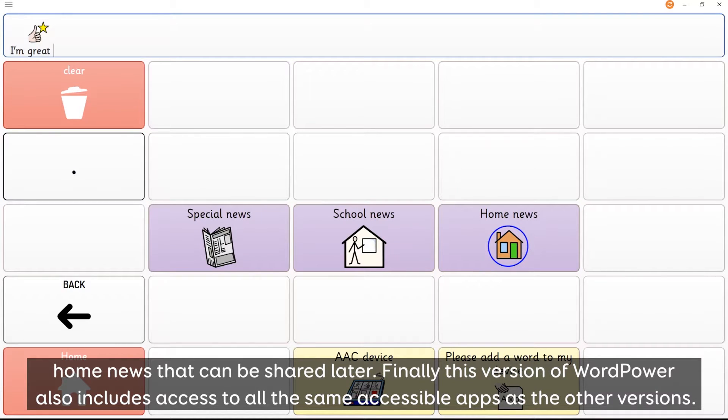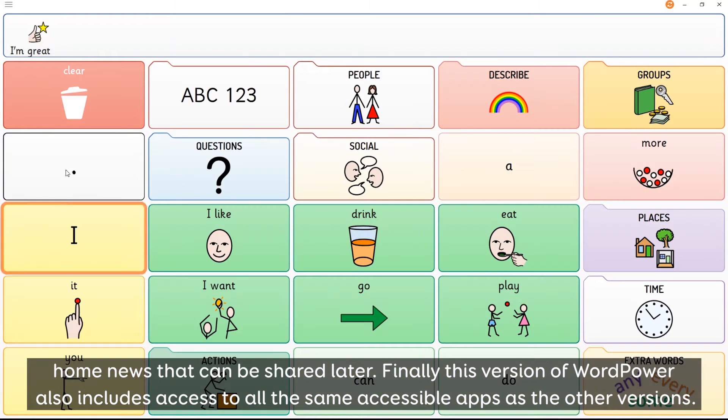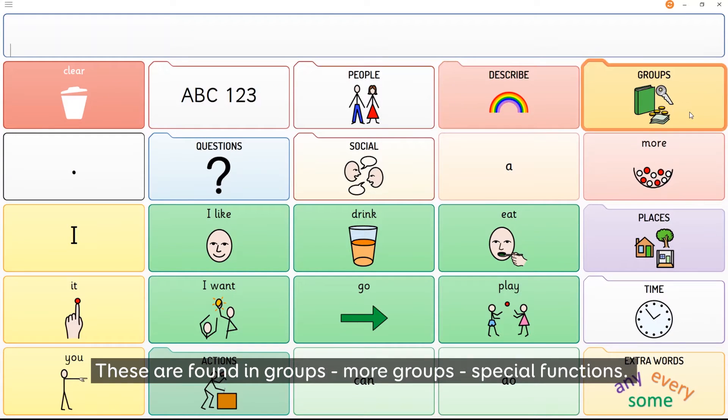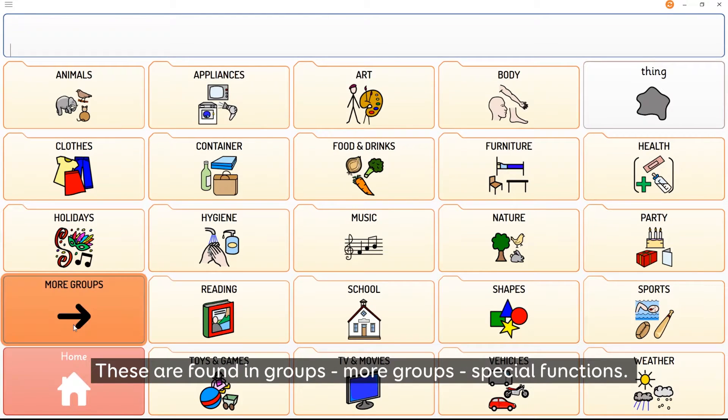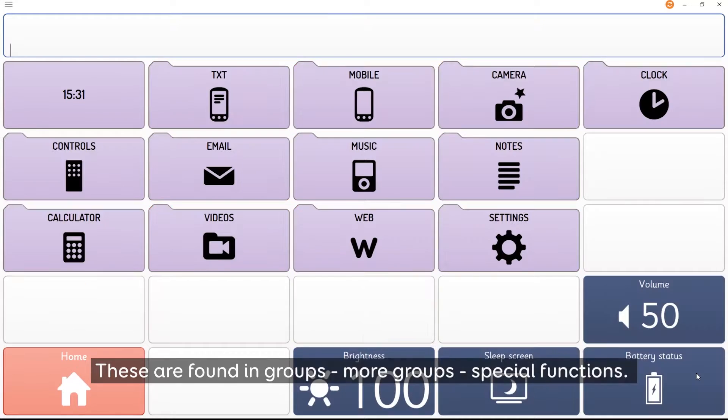Finally this version of word power also includes access to all the same accessible apps as the other versions. These are found in groups, more groups, and special functions.